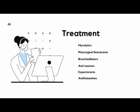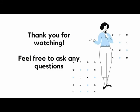Pharyngeal demulcents are soothing agents that soothe the throat — such as lozenges, cough drops, glycerin, and honey. They provide symptomatic relief in dry cough arising from the throat. This is the brief introduction to the topic of cough. Thank you so much for watching the video, and if you have any questions, you can ask in the comments.